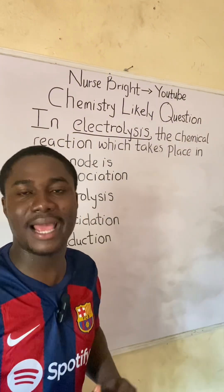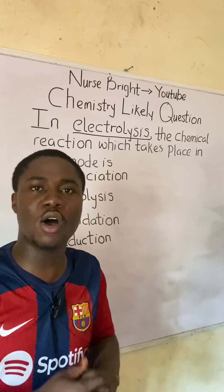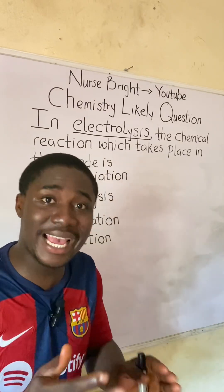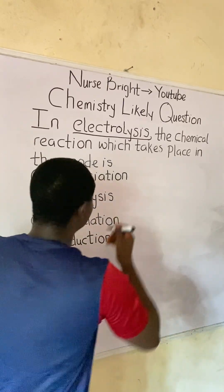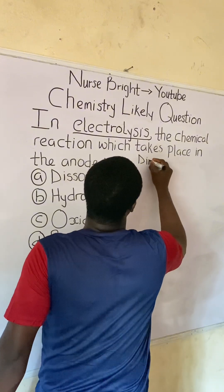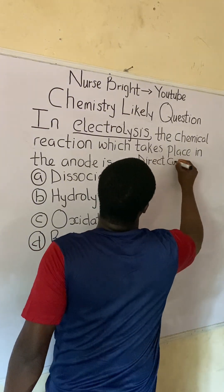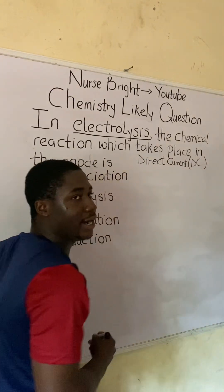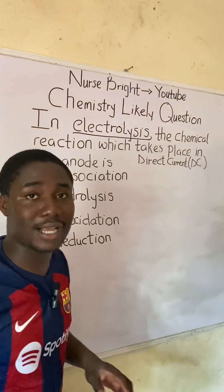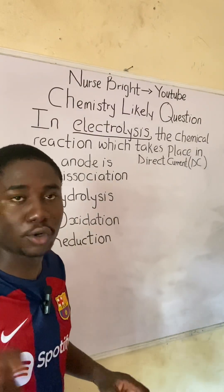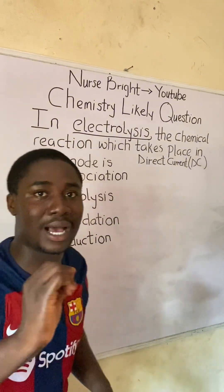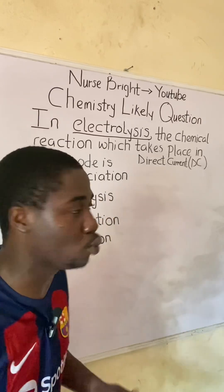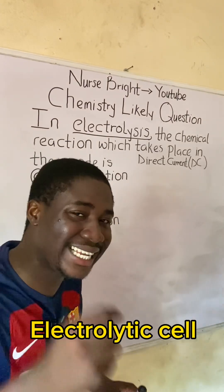What is electrolysis? Electrolysis is simply the passage of direct current — that is DC, not alternating current which is AC. Electrolysis has to do with the passage of direct current, and it must be noted that electrolysis as a process occurs in a special vessel called the electrolytic cell.